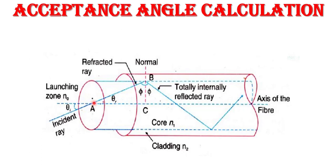The incident ray makes an angle with the axis of the fiber called the angle of incidence, theta i. When the light ray enters the fiber it refracts, making an angle theta r — the angle of refraction. This refracted ray strikes the core-cladding boundary at angle phi. If phi is greater than or equal to the critical angle phi c, total internal reflection takes place and light propagates down the fiber.